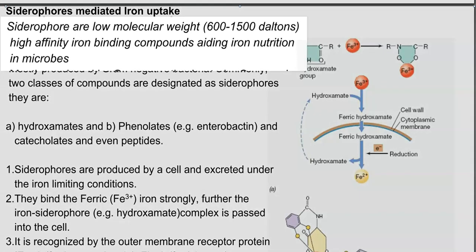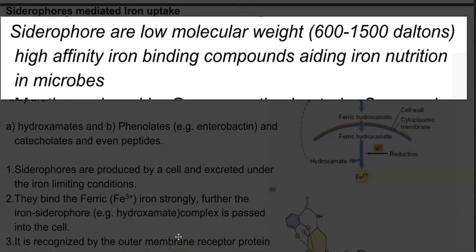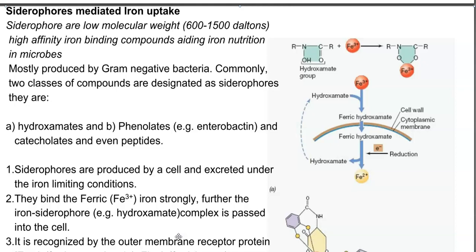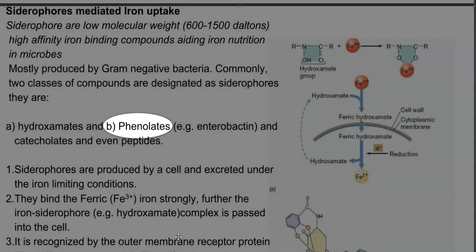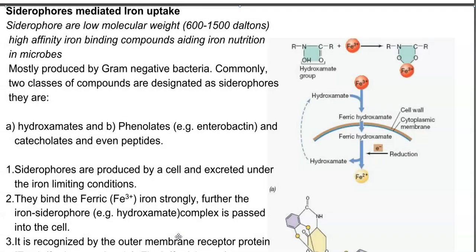Siderophores are low molecular weight compounds — between 600 to 1500 Daltons in size — that show high affinity for iron, aiding in iron nutrition in microorganisms. Apart from microbes, plants are also found to excrete siderophores. Mostly in microorganisms they are produced by gram-negative bacteria. Two classes of siderophores have been recognized: one is the hydroxamate type and the other is the phenolate type. Certain catecholate and peptide compounds can also act as siderophore molecules.